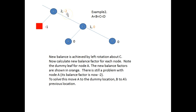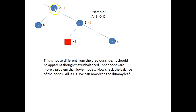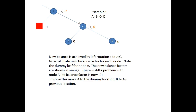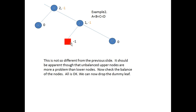What we're going to do is move A to the dummy location and B up to A's location. You can see we move B up to A's position and A down to the dummy position. The height of the dummy is minus one, the height of D is zero, the height of C is one, the height of B is two, and the height of A is zero. Balance factor: minus one minus zero equals minus one. So this is balanced.